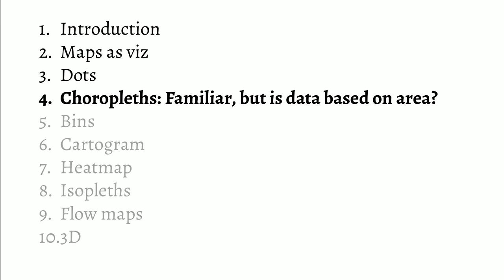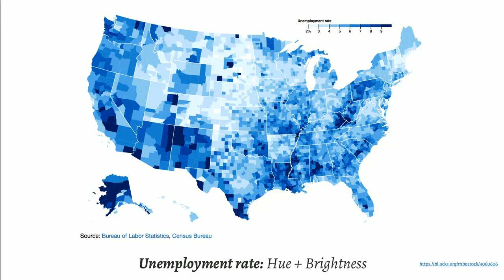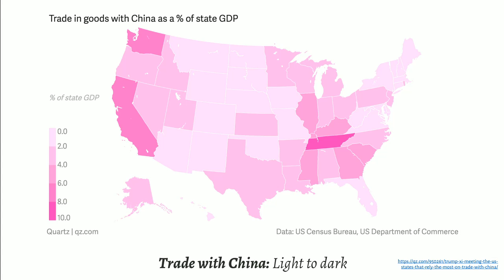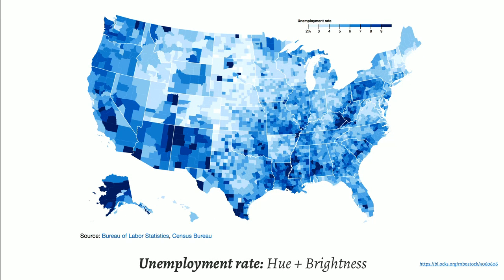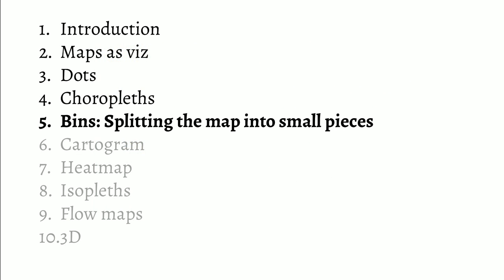The problem with choropleth is that the data is always relative to area. You don't know where humans actually are within a state. This leads to misleading conclusions — places with high populations have more McDonald's and more car accidents, but that doesn't mean McDonald's cause accidents; it's just population. A similar confounding question always comes up with choropleths, and a quick way to address it is to split the map into equally sized units.